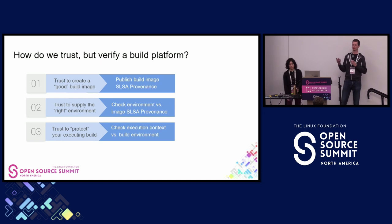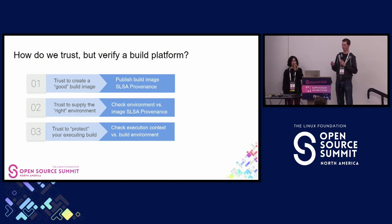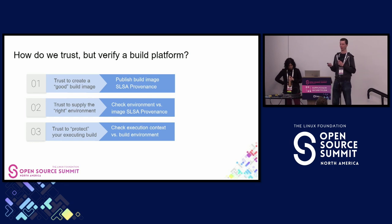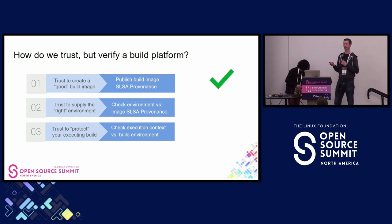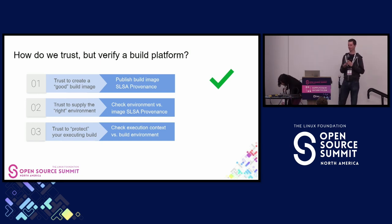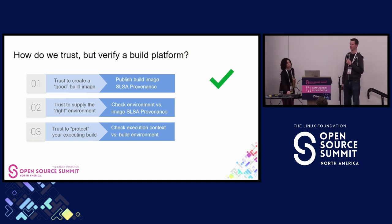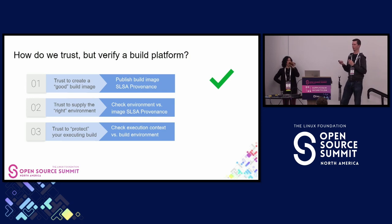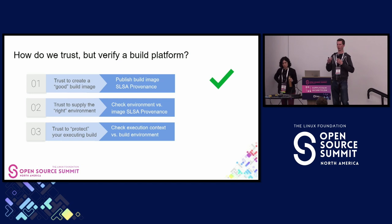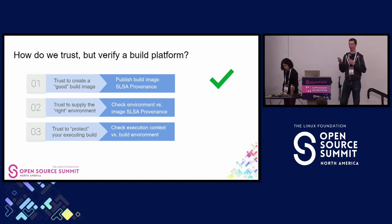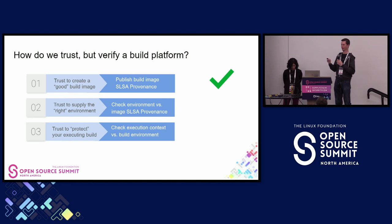Our approach is to lean into another SLSA guiding principle: prefer attestations over inferences. Whenever possible, we should capture explicit evidence about artifacts. The build platform consists of cooperating software layers and many artifacts, so we want to apply that same idea to the build platform itself. We think we can do this by leveraging existing mechanisms to attest to the build environment configuration and components. The first problem — build image tampering — is actually not that bad. The build image is an artifact of a process we can treat like a build, and we already have a solution: SLSA provenance. We can have a cryptographic link from an artifact back to its build steps. This is already published in SLSA L1.